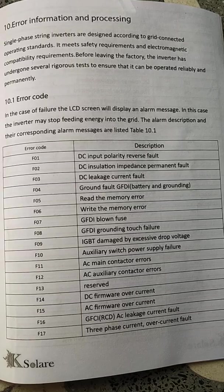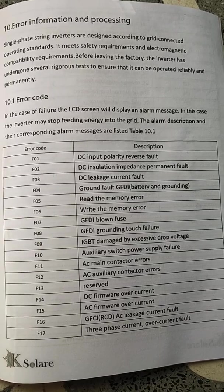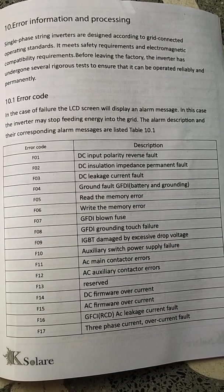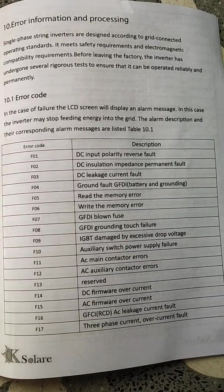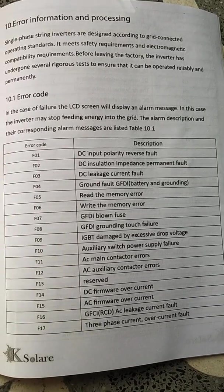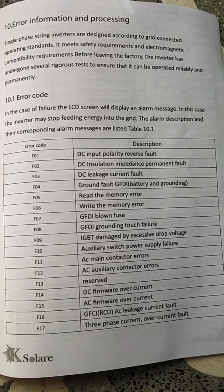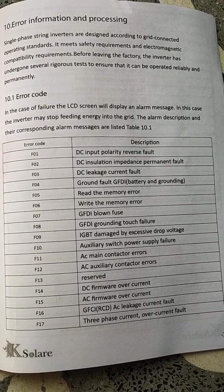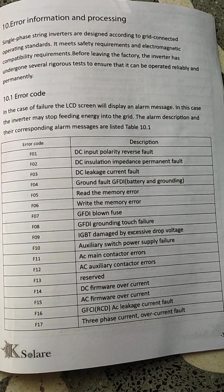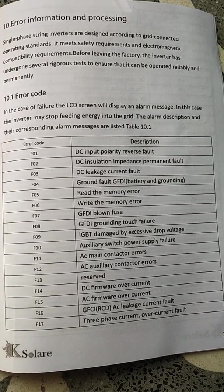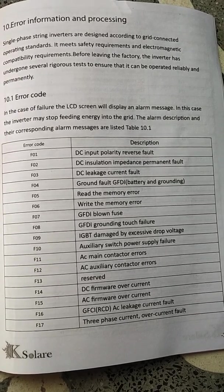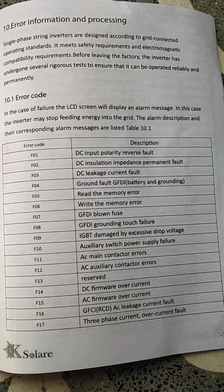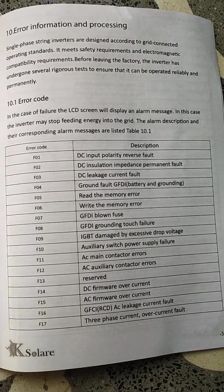F3 fault code. F4 is Ground Fault. F5 is Read Memory Error. F7 is 3-Phase Current Over Current Fault.